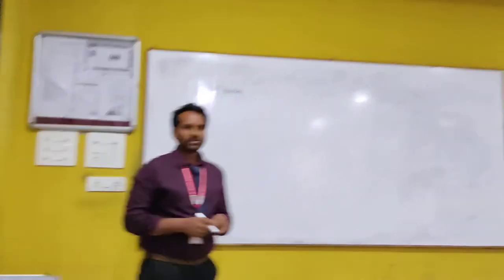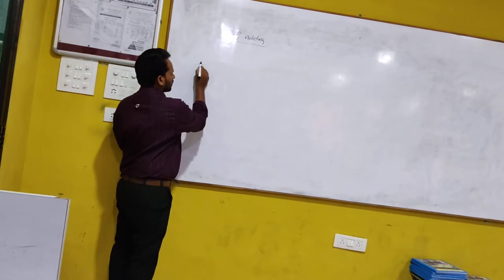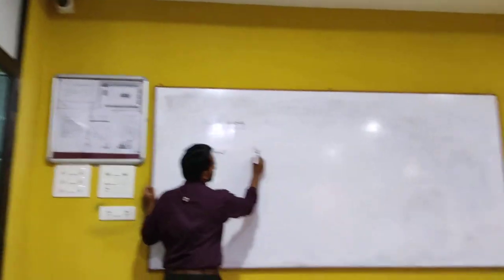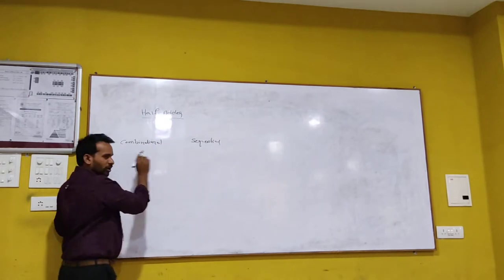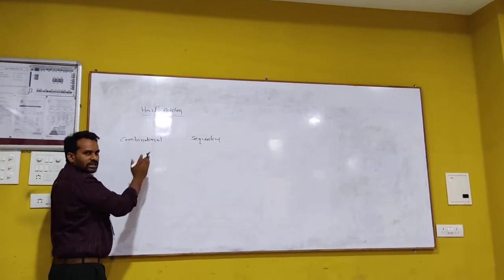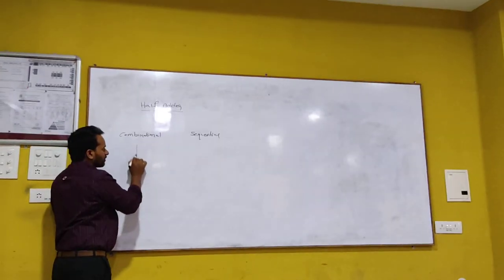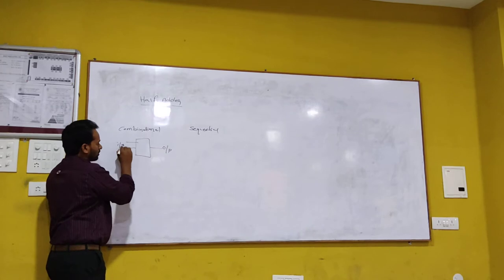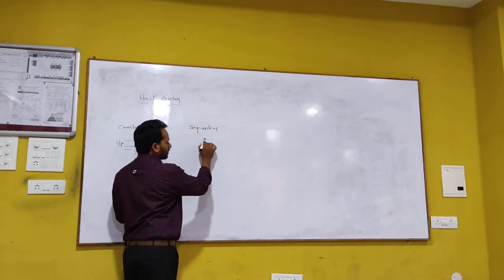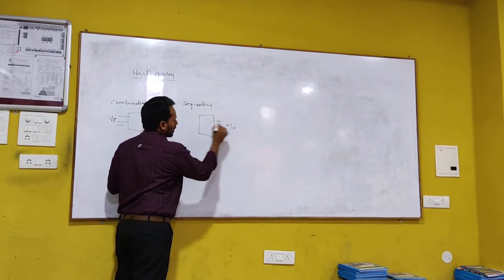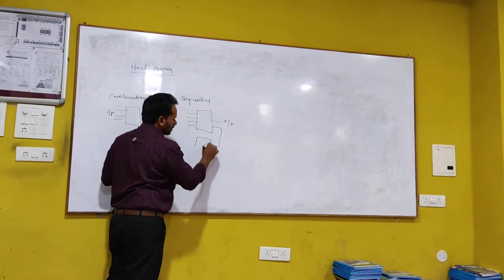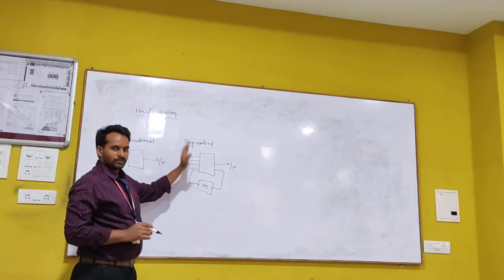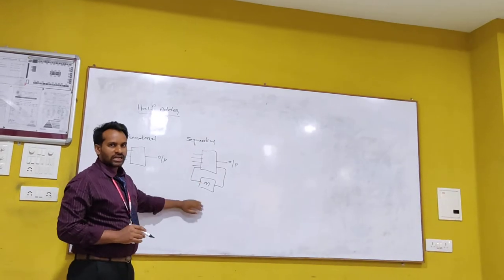The difference between combinational circuit and sequential circuit is: in the combinational circuit, the output depends on present inputs. Whereas in the sequential circuit, the output not only depends on inputs, but also depends on previous output. So the sequential circuit output depends on both present inputs and previous output.